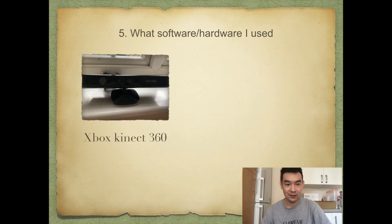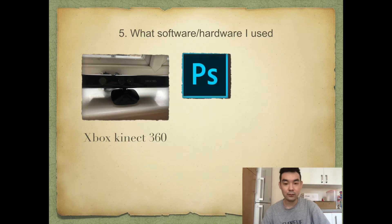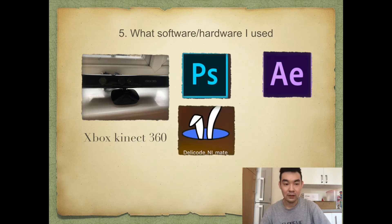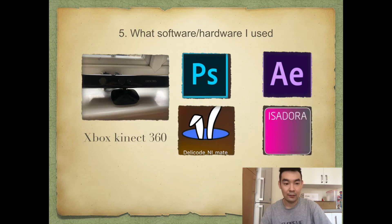The Xbox Kinect was purchased on Amazon as the connected device for interaction. Under the guidance of Alex, I learned how to connect to Isadora through YouTube tutorials. Photoshop was used to draw the wings and add color processing. After Effects was used to make wing special effects, making the wings look more vivid. Isadora was used to connect the computer so that images of people appear on screen, and I made many attempts to connect the wing interactions to the various body values.